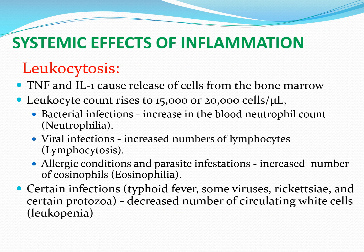Leukocytosis is a very important systemic effect of inflammation. The master cytokines TNF and interleukin-1 cause the bone marrow to produce more and more white cells; the normal count of 4,000–11,000 may rise to 15,000–20,000. Importantly, if the raised count shows predominantly neutrophils, the source is likely bacterial; predominance of eosinophils suggests parasitic infection, viral infection, or hypersensitivity to an allergen; and lymphocytosis — increased lymphocytes — indicates a viral infection as the cause.